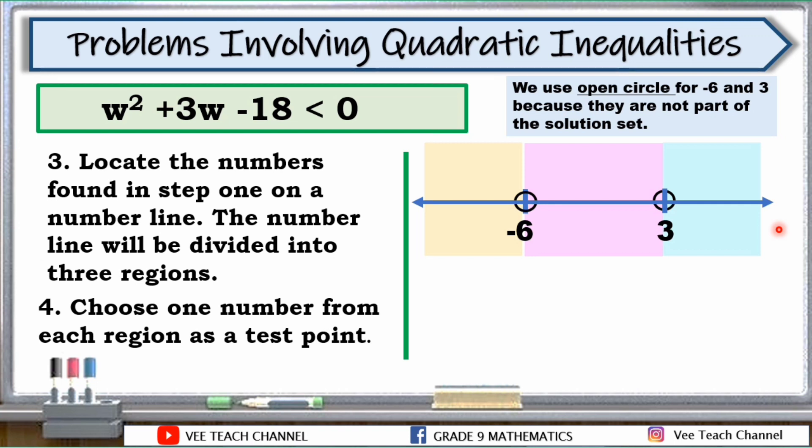Tatlo yan. Ang gagawin natin is to choose one number from each region as our test point. Kukuha tayo ng mga test point natin sa kada region. For this region, we have negative 7. Kasi ang sakop niyan, yung mga numbers simula negative 7, negative 8, and so on. So pwede kayong kumuha kahit negative 8, negative 9, pero kunin natin negative 7. Dito naman, ang kukunin natin is 0. So numbers sa pagitan ng negative 6 and 3, para mas madaling isolve, kunin natin yung 0. So this is our test point for the second region. For the third region, ang kunin natin is 4. Kasi ang sakop nitong third region natin is simula 4 pataas. Kasi 4 pataas. Hindi kasali ang 3.